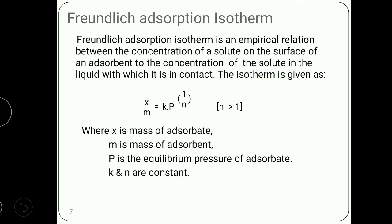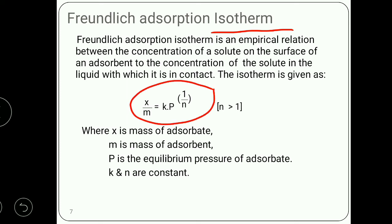Adsorption isotherm is a graph between the amount of gas adsorbed per unit mass of the adsorbent versus pressure at a given temperature — the name makes it clear that isotherm means at constant temperature. Freundlich isotherm gives an empirical relation between the amount of gas adsorbed per unit mass of the adsorbent with pressure at a given temperature. Freundlich gives an equation where x is the mass of adsorbate, m is the mass of adsorbent, p is the pressure, and k and n are constants, where the value of n is greater than 1.